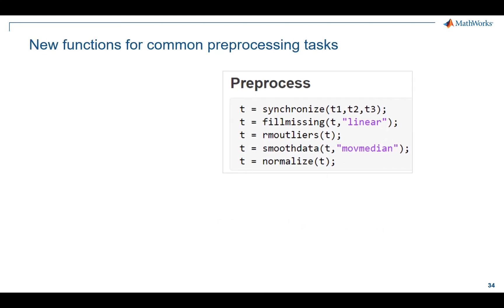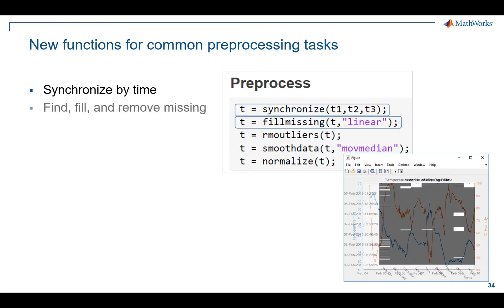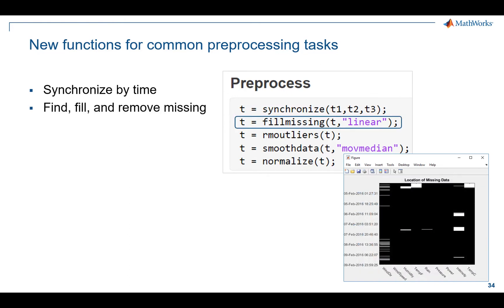Specifically, I want to call out fillmissing and removeoutliers. These are functions that in the past you maybe even have written yourself to some extent to deal with these use cases. These are very powerful functions off the shelf to help you do that work. Synchronize allows you to take a couple of timetables that maybe were sampled at different rates and bring them together, basically apply that interpolation math to the data so you can visualize it. Fillmissing will find the missing data, fill it, and maybe remove the missing, and you have control over how all that's done.